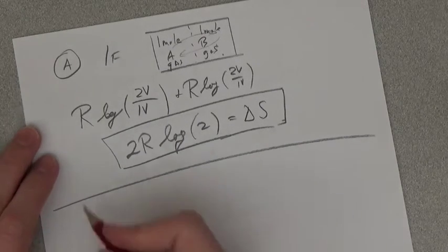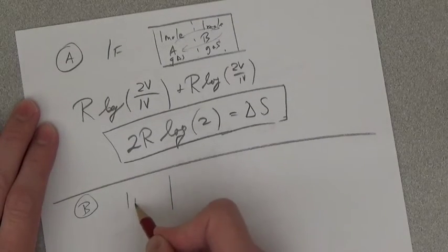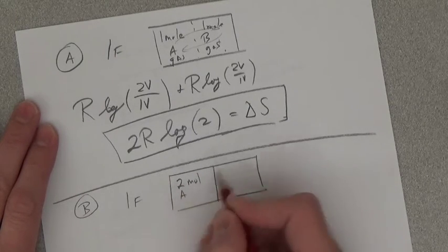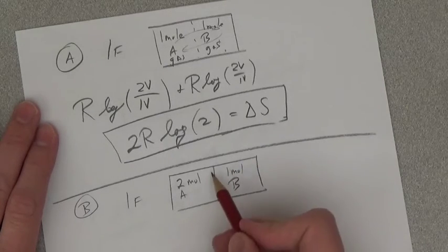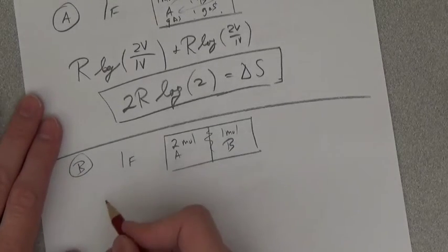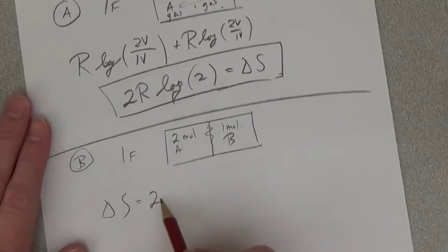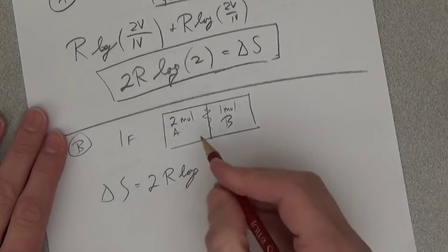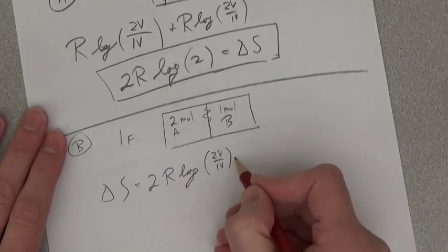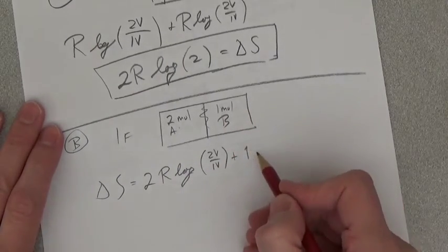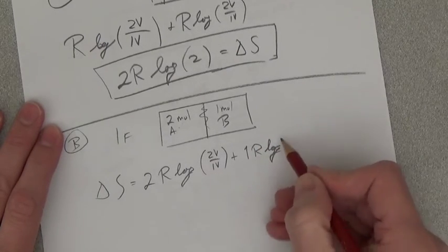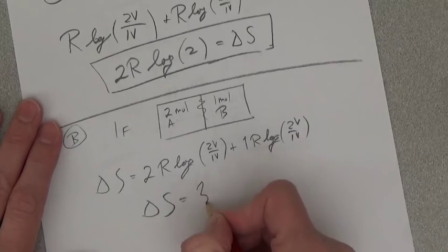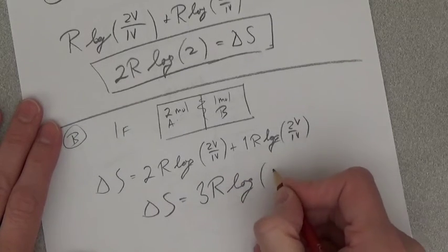The next problem, part B, says what if we have this, and we have 2 mole of A, 1 mole of B. Remove the partition. So, that means delta S is equal to 2, because n is equal to 2, R log 2V over 1V, plus 1, 1 mole of B. 1 mole of B, R log 2V over 1V. Delta S is equal to 3R log 2.